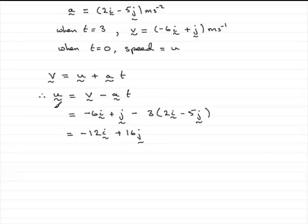Now this is the initial velocity vector, but we're asked for the speed, and the speed is given by u, which is the magnitude of the initial velocity vector, this one here. And how do we find that magnitude? We should know that it's the square root of the sum of the squares of the components, 12 squared plus 16 squared.